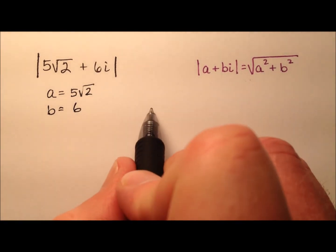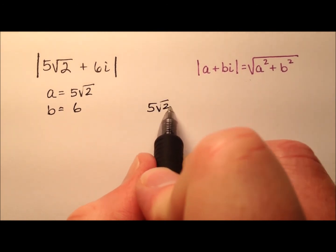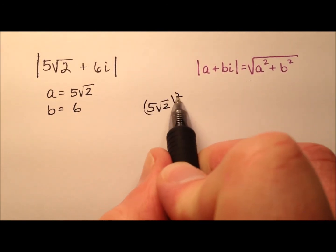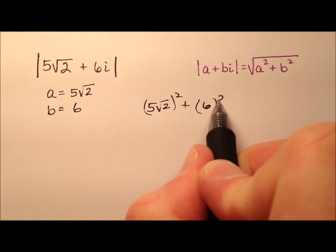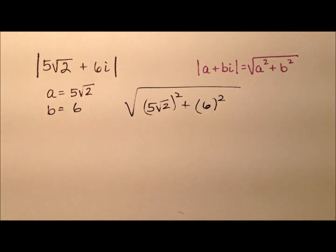So let's go ahead and work our formula. So a squared is 5 times radical 2 squared plus 6 squared, and that's the square root of that.